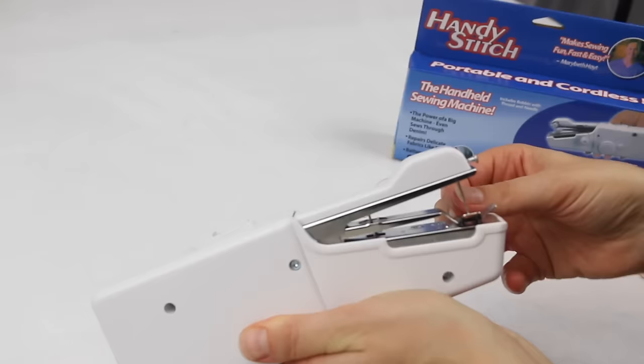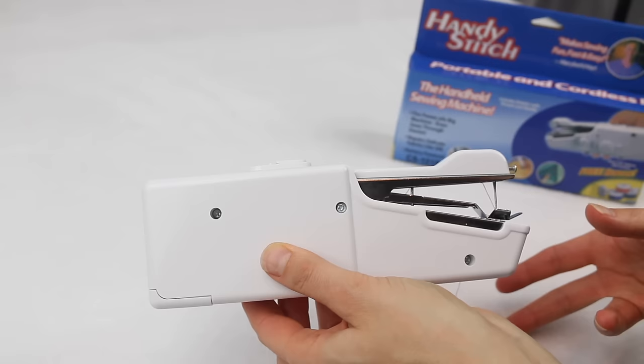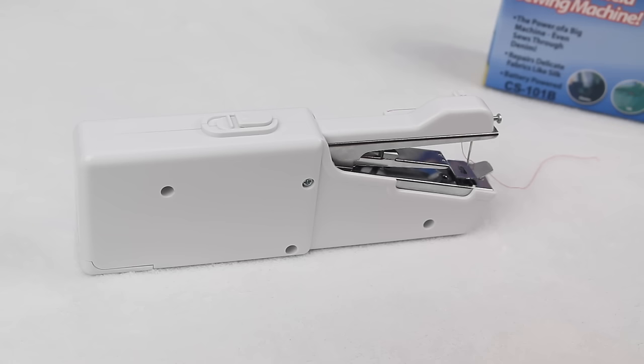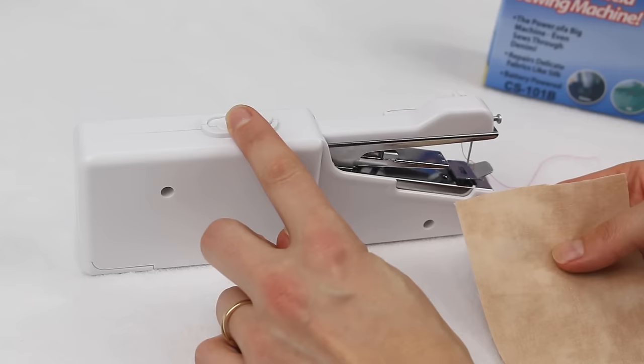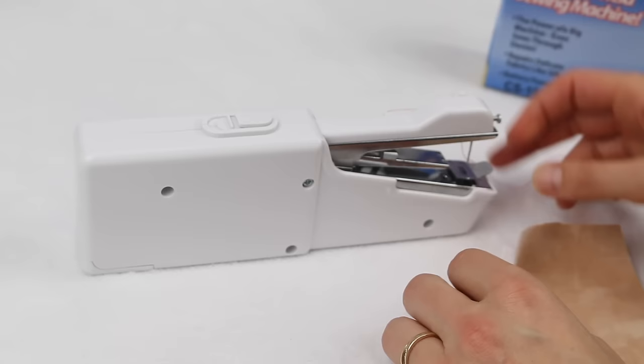I'm going to show you the way that I prefer to use or the easiest way that I think to use it. The easiest way I found is to have the little handheld sewing machine sitting on your table like so. I use my left finger to operate the on-off switch and then I use my right hand to guide the fabric through. I've just got two pieces of cotton here that I'm using.